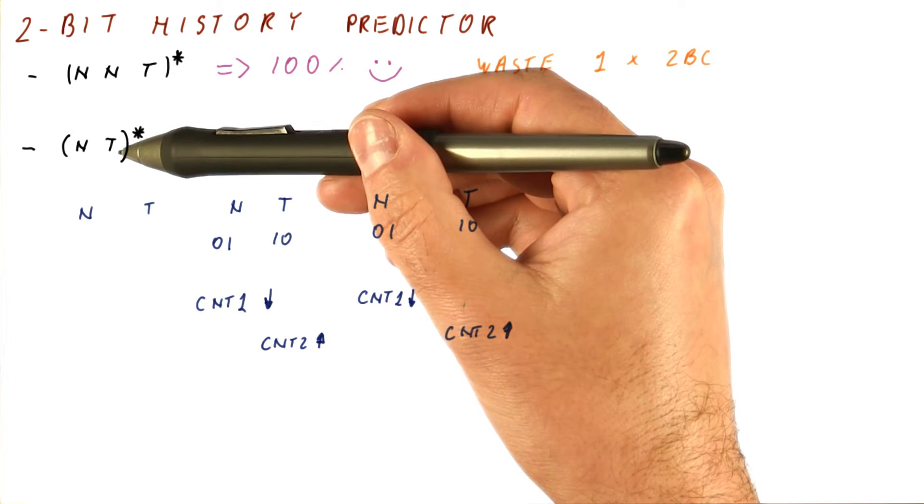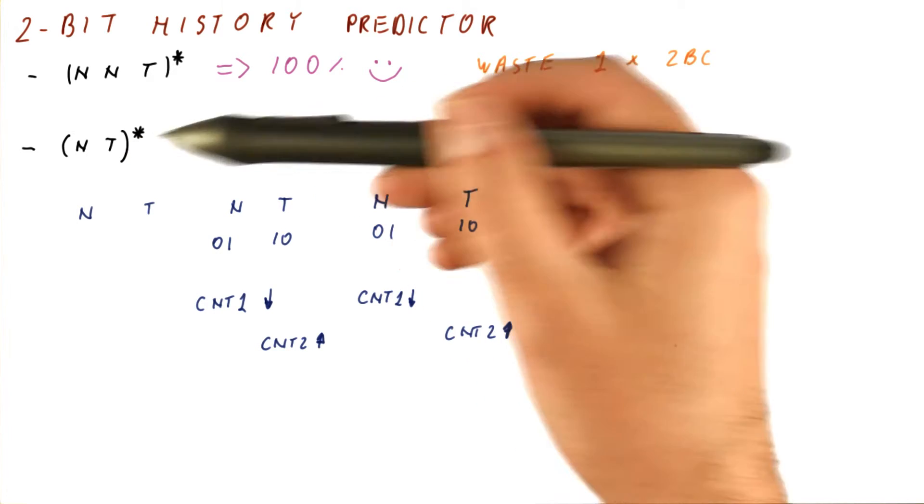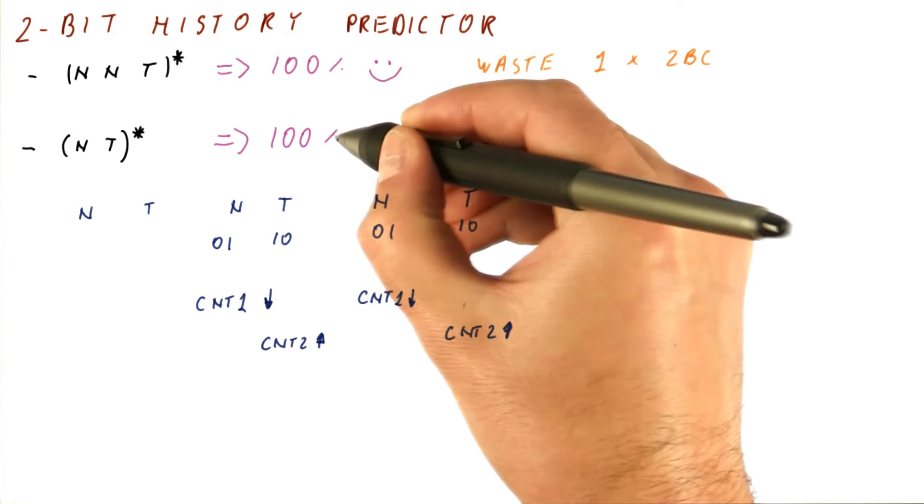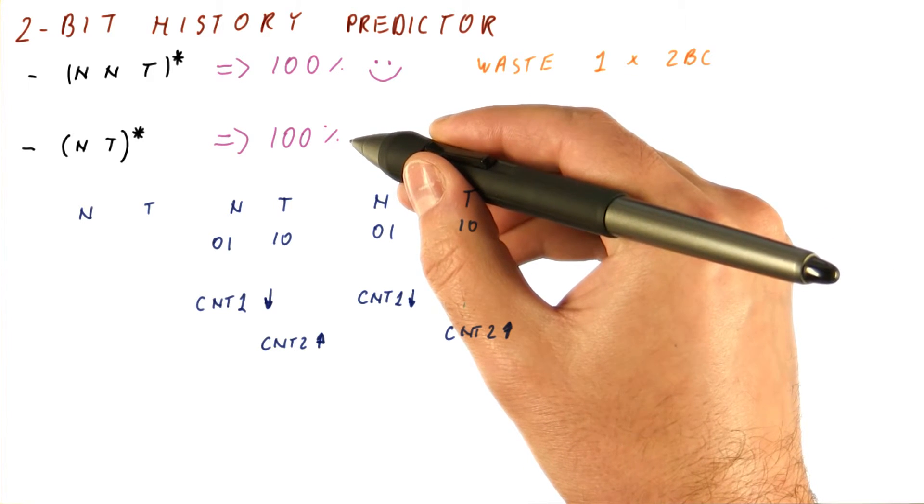We never can see the history of 0, 0 or 1, 1. Which means, after the initial warm-up period, this predictor will also predict this with 100% accuracy.